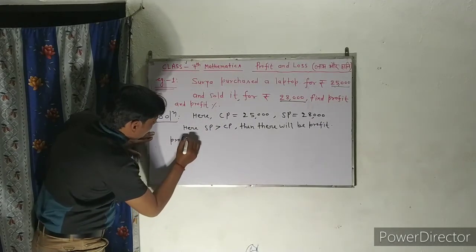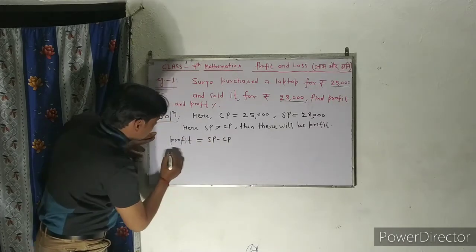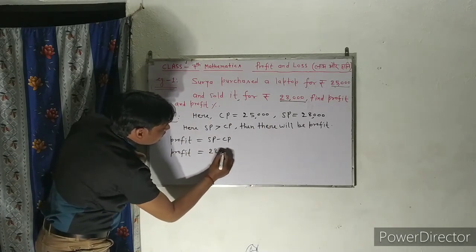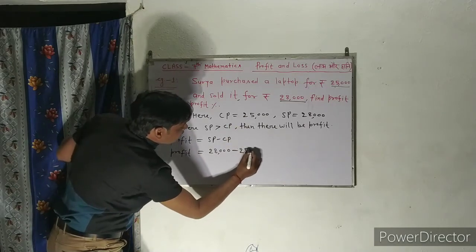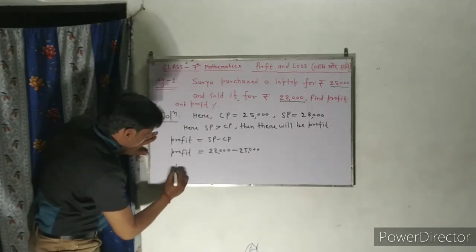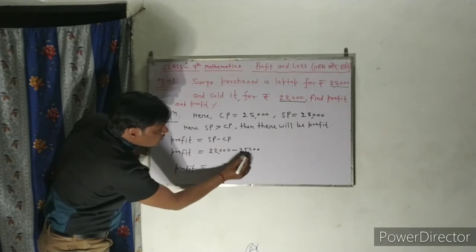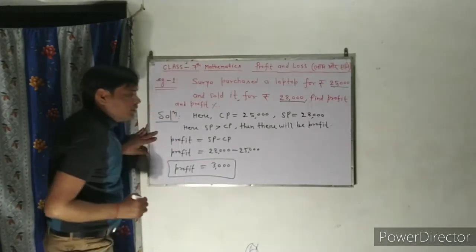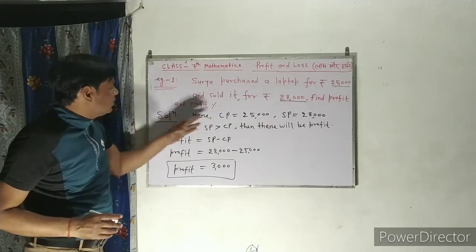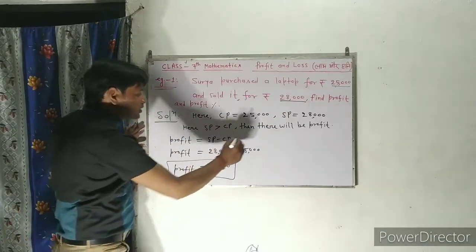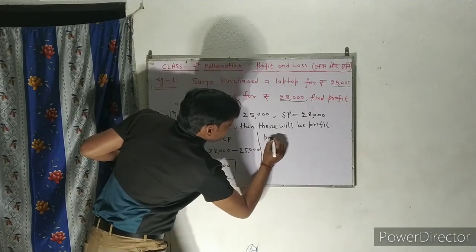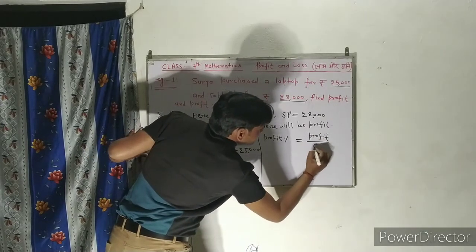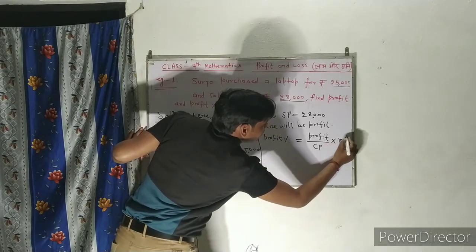Profit निकालते कैसे? Profit equal to SP minus CP. Profit equal to 28,000 minus 25,000. तो profit क्या मिल गया आपको? 3,000 आपको profit हो गया. Profit पूछा था और profit percent भी पूछा है।